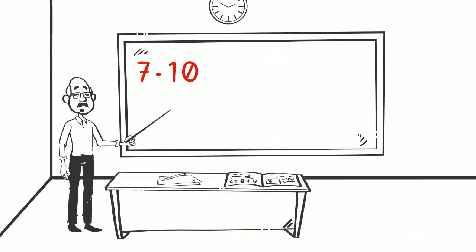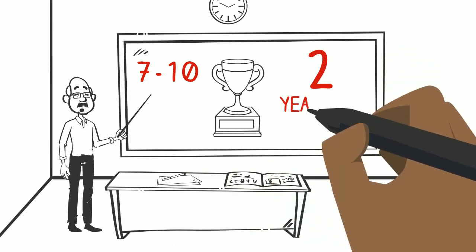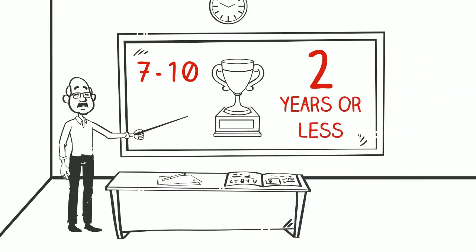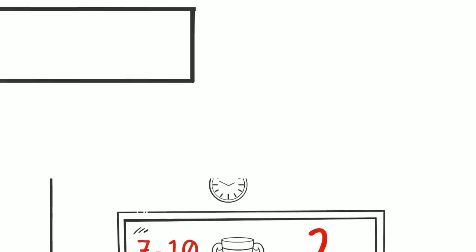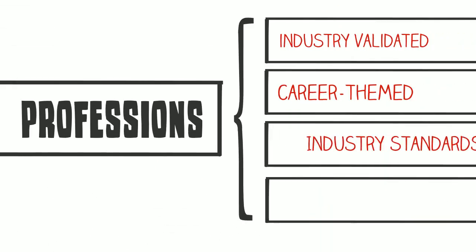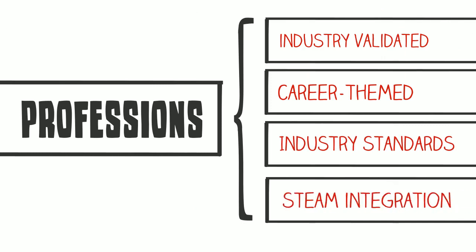We enlighten our students with work-based curriculum that establishes a list of at least seven to ten industry certifications that Jennings students as well as residents can complete within two years or less and even before high school graduation. We expose them to professions through an industry-validated career-themed curriculum that incorporates current industry standards and STEAM integration.